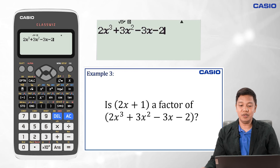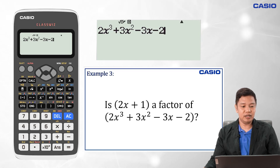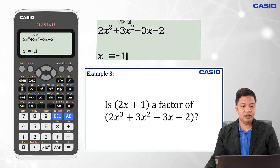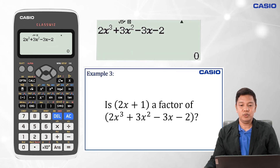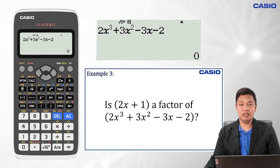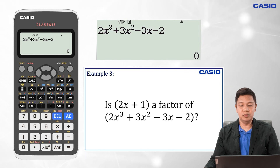Using the Remainder Theorem, we evaluate the polynomial at x equal to negative one-half. We press Calculate, then enter negative 1 over 2 using the fraction button with denominator 2, press Equals, and another Equals gives us a remainder equal to 0. Since the remainder is 0, by the Factor Theorem we can say that the binomial 2x plus 1 is a factor of the polynomial 2x cubed plus 3x squared minus 3x minus 2.